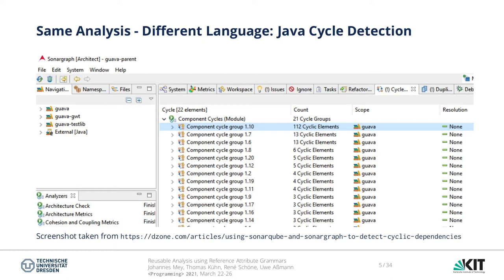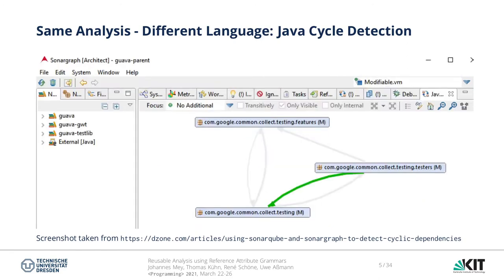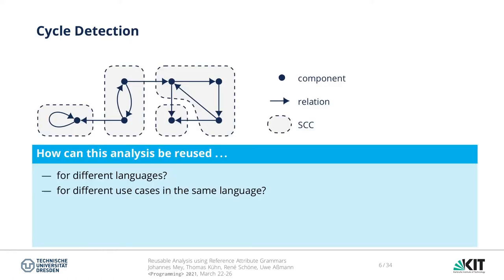Here we see an analysis of dependencies in Java. Using SonarGraph, there are also some nice visualizations showing strongly connected components of Java classes for the use relation. Interestingly, the same analysis can also be done on package level, which is a nice example for reuse even within one language. So we have seen the same analysis three times, for two different languages.